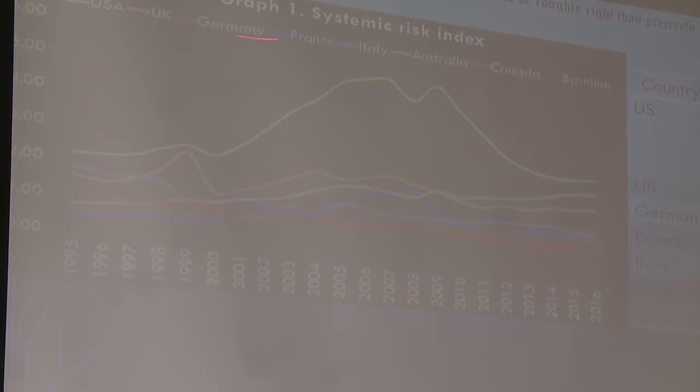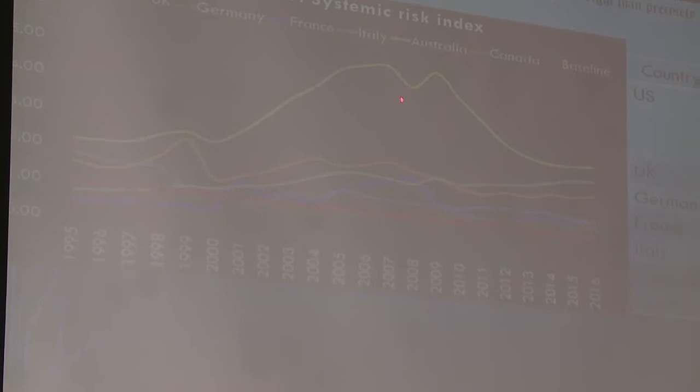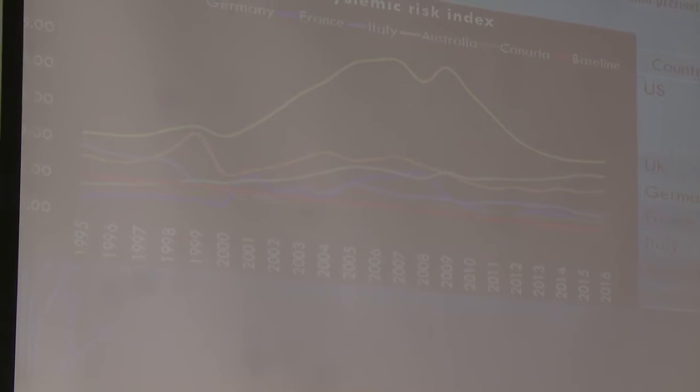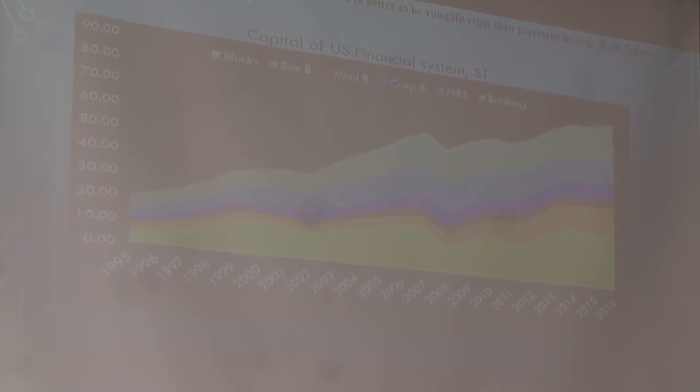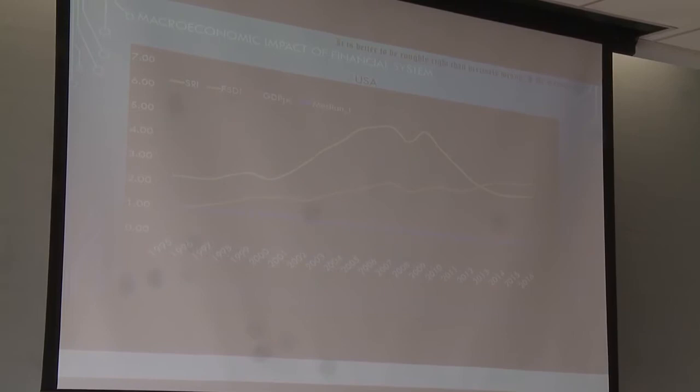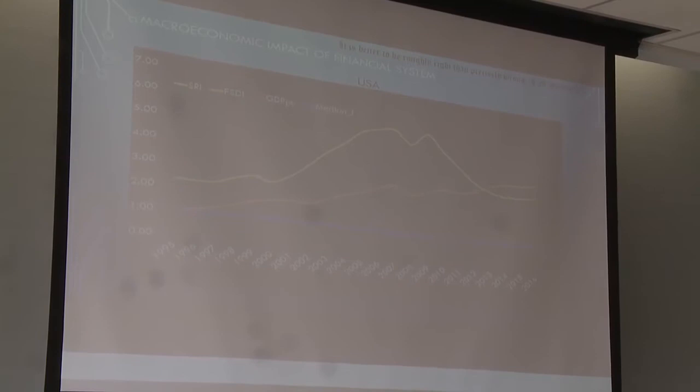The dot-com bubble also had a spike. So the systemic risk indicator helps a lot to understand what's going on in the economy during a growth period. Combining this with how the financial system grew over the last 22 years — four times on average across all markets — that's an extremely successful growth for the financial system.